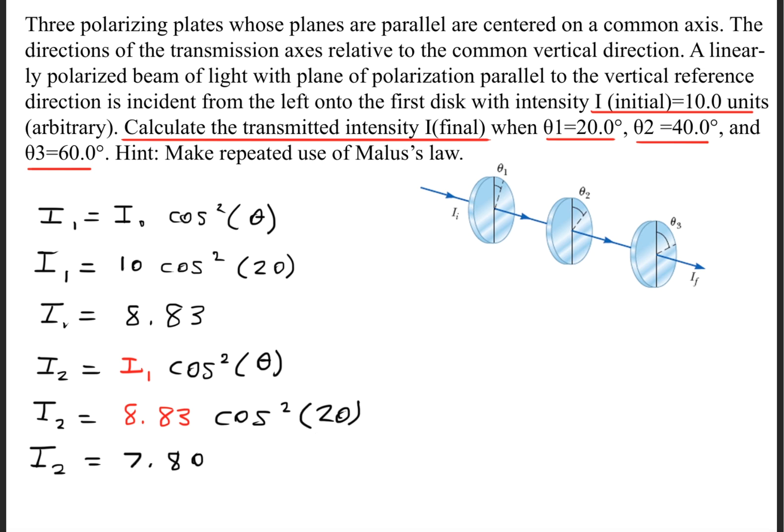This will give us a value of 7.80. Now to find the final intensity, we'll take the I₂ and multiply it again by the cosine of 20, and we'll square that. This will give us the final transmitted intensity of 6.89 units.